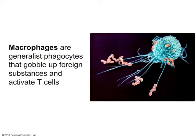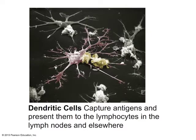Another type of cell in lymphoid tissue are macrophages — literally large eating cells. These are generalist phagocytes that gobble up foreign substances and also help to activate T cells. Dendritic cells are specialized antigen-presenting cells — they go out and capture antigens throughout the body and present them to lymphocytes so they can be recognized and responded to. Dendritic cells have long cytoplasmic extensions that ensnare antigens, then bind to those antigens and present them to lymphocytes for recognition and destruction.